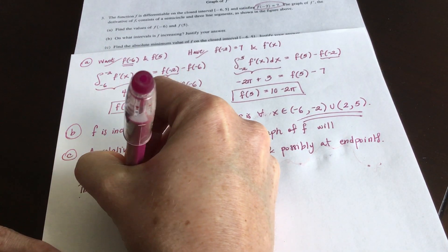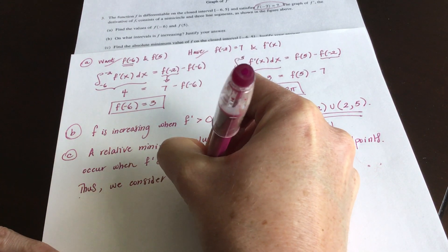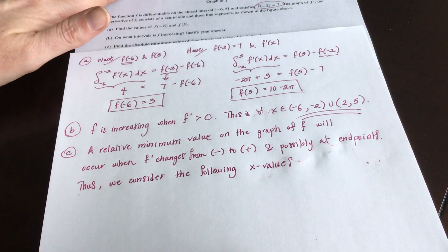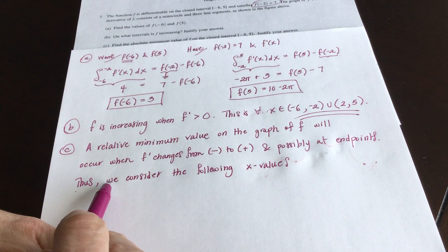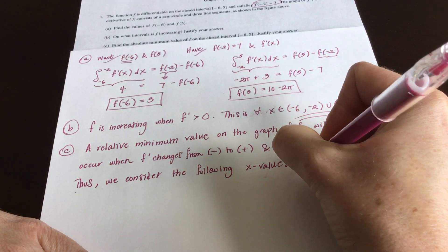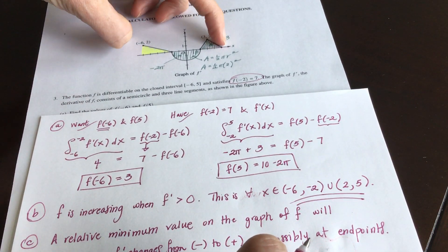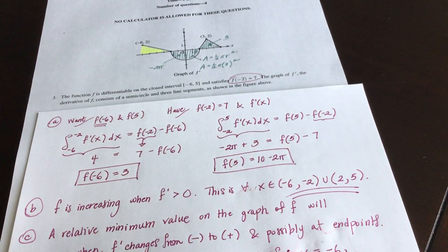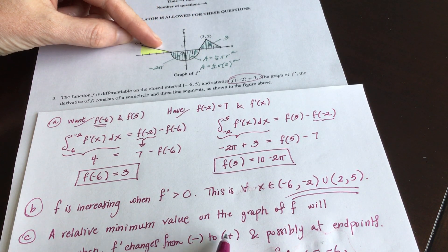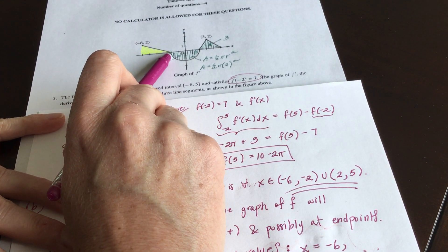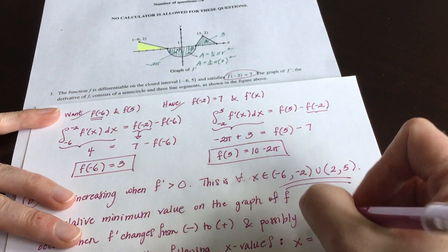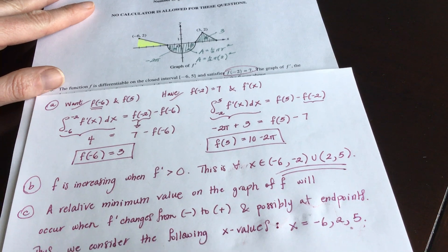We consider the following x-values: both endpoints, negative six and five, plus any interior point where f prime changes from negative to positive. Looking at the graph, f prime changes from negative to positive at x equals two — so our candidates are x equals negative six, x equals two, and x equals five.